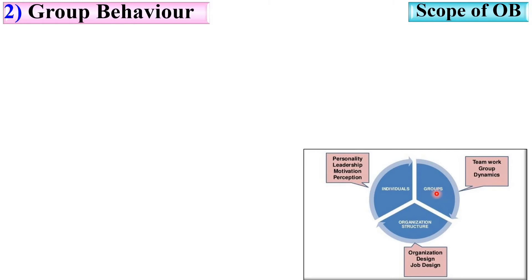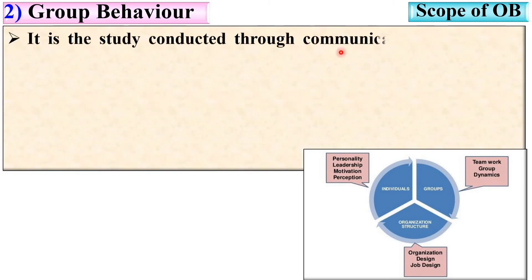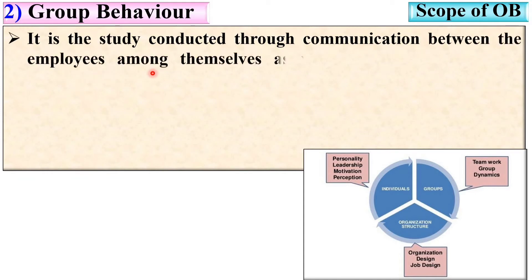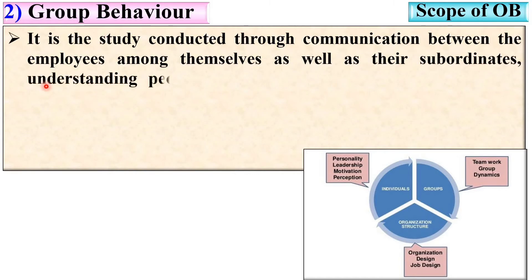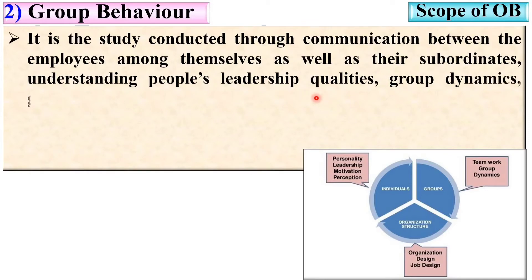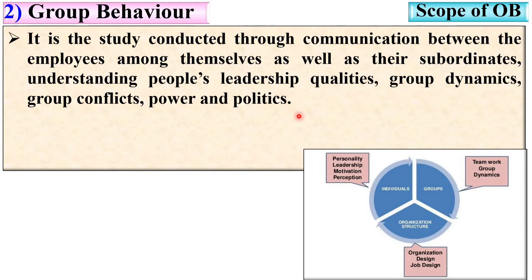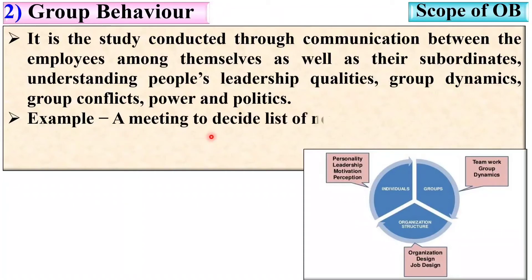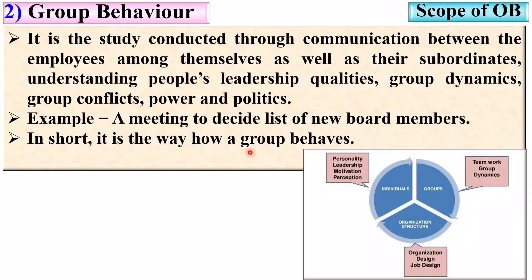The next level is group behavior. It is the study conducted through communication between employees among themselves as well as their subordinates, understanding people's leadership qualities, group dynamics, group conflicts, power and politics. These properties are all related to the group, which is why it is called group behavior. For example, a meeting to decide a list of new board members involves group behavior. In short, it is about how a group behaves with another group or within the group — for example, a strike or rally.